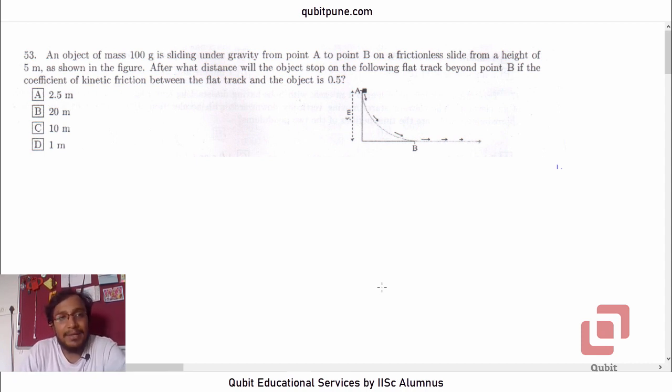An object of mass 100 grams is sliding under gravity from point A to point B on a frictionless slide from a height of 5 meters. As shown in the figure, this is A, the object will slide down along a frictionless surface and reach B. After what distance will the object stop on the following track beyond point B if the coefficient of kinetic friction between the flat track and the object is 0.5? So this surface is given to us as smooth and this is rough.